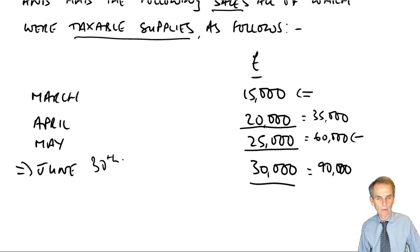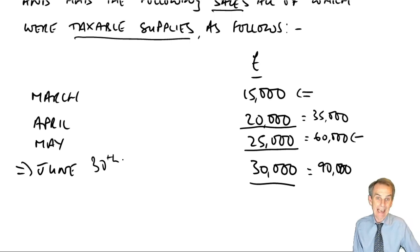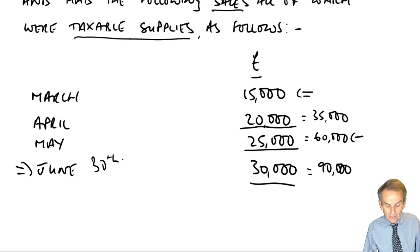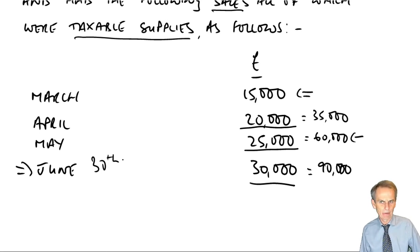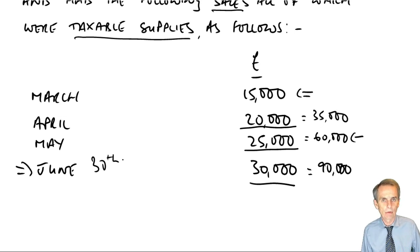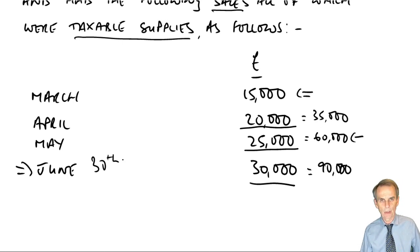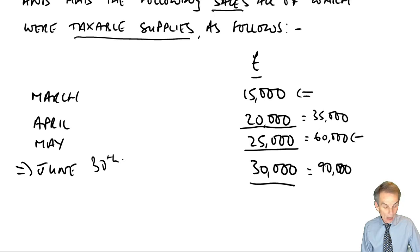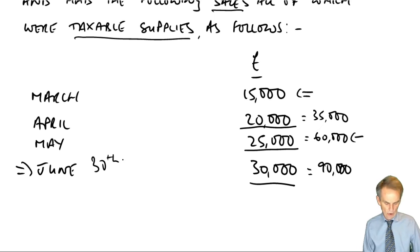From the 1st of August we're now accounting for VAT. As soon as we have to account for VAT, we're going to have to submit VAT returns. How do we get the comparison of output tax versus input tax? All of that is coming up later. But hopefully you can see the basis on which we use the compulsory registration rules.